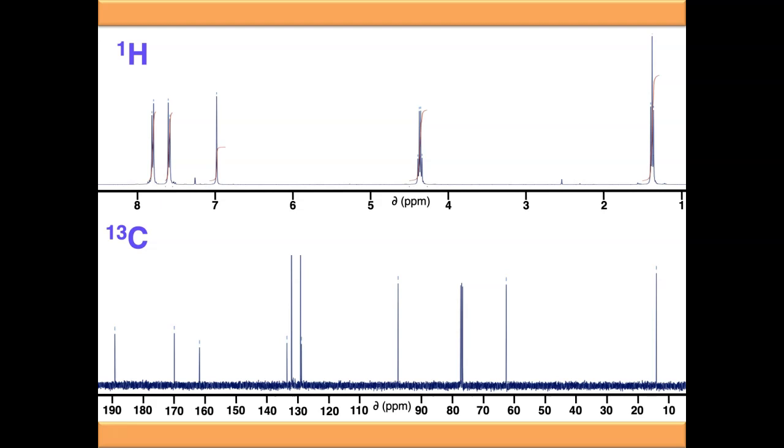On a carbon NMR, the scale is much longer, between 0 and about 220 ppm. You'll also notice most signals in a carbon NMR don't have any splitting—they all appear as singlets, whereas in proton NMR we see signal splitting. You'll also notice that on carbon NMR, you don't get the integrated trace like you do on proton NMR.